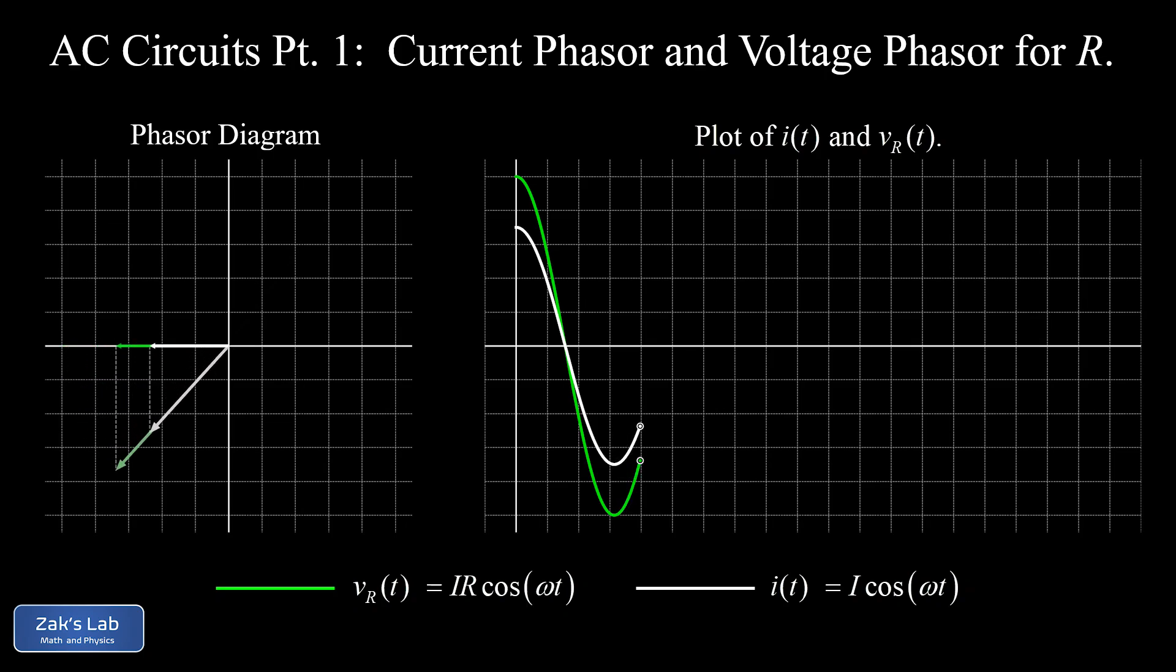We show how to represent that current with a real rotating vector called a phasor and then we extend this idea to finding the voltage phasor for a resistor.